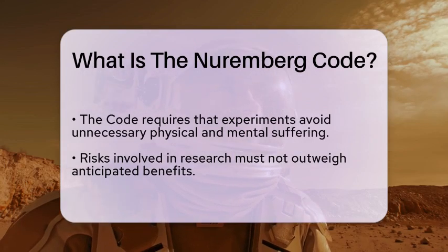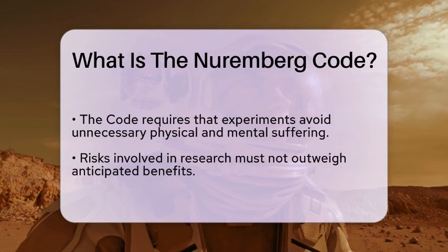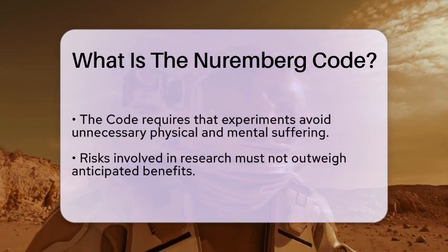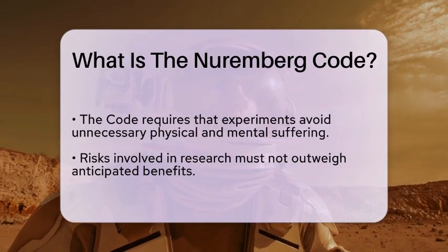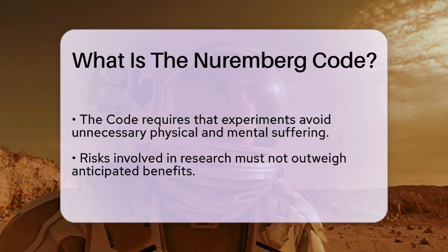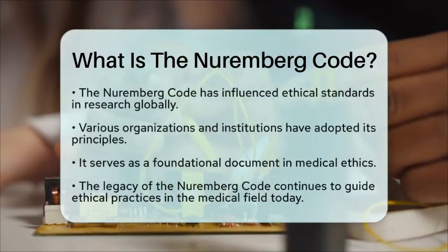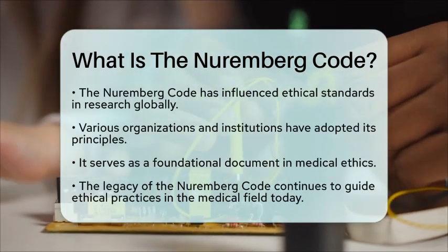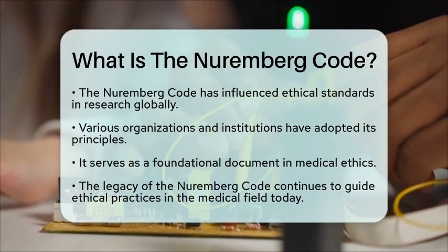Another key aspect of the Nuremberg Code is the requirement for experiments to avoid unnecessary physical and mental suffering. It stresses that the risks taken must not exceed the benefits anticipated. This framework has significantly influenced ethical standards in research, and has been adopted by various organizations and institutions worldwide.